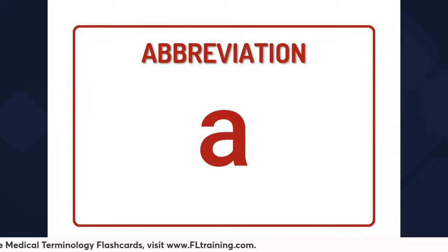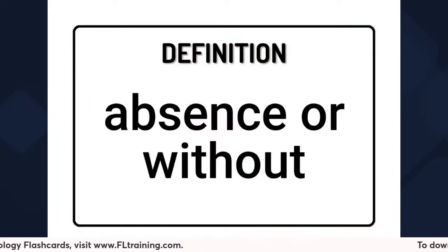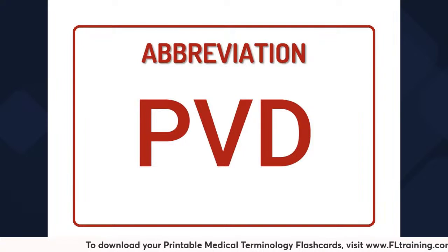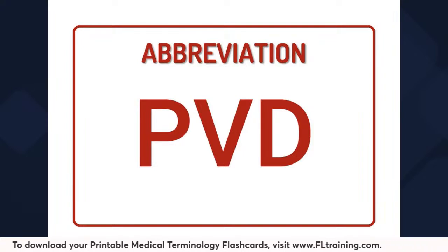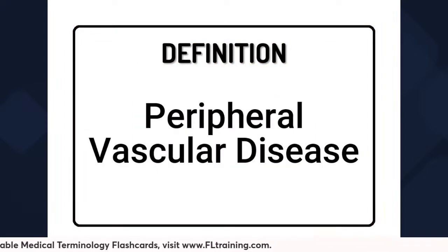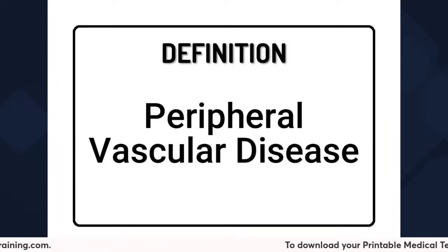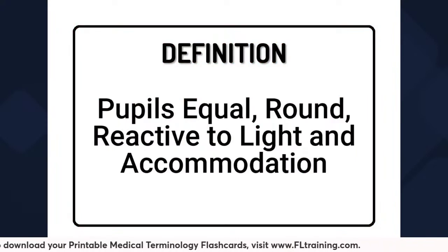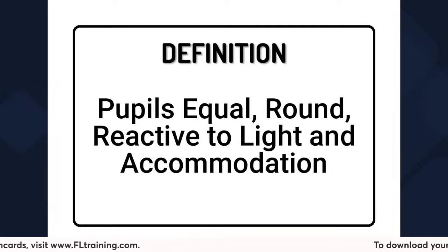The prefix A means absence or without — so if you see that in front of a word, usually the person is lacking something. P-V-D means peripheral vascular disease, meaning that they have circulation issues. PERRLA means that the patient's pupils are equal, round, reactive to light, and accommodation — so that would be a normal finding.